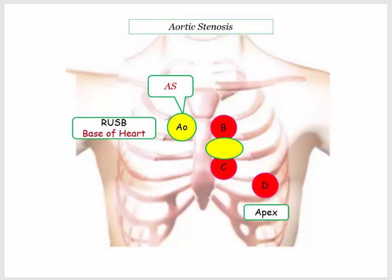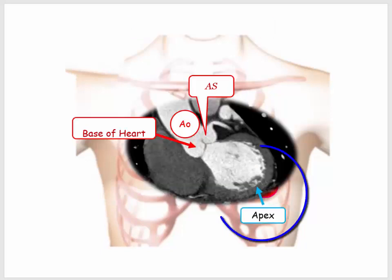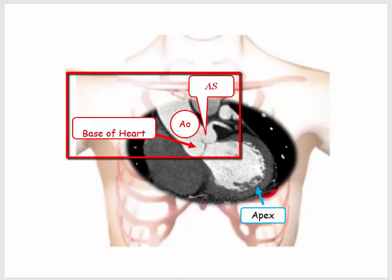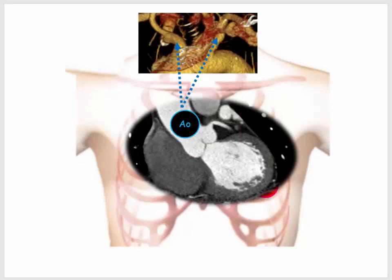Focusing just on aortic stenosis, the murmur may also be described at the base of the heart. Rather than struggling to understand why this is considered the base, I simply highlight the location of the cardiac apex. If we can comfortably identify that region as the apex, it is easier to identify the opposite region as the base. We can also see how the aortic stenosis murmur radiates to the carotids — the carotids are just up the road a bit.